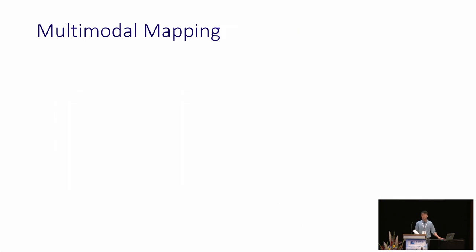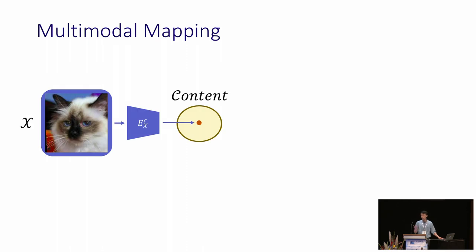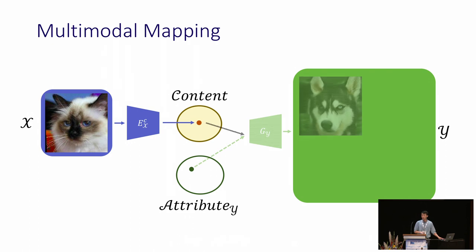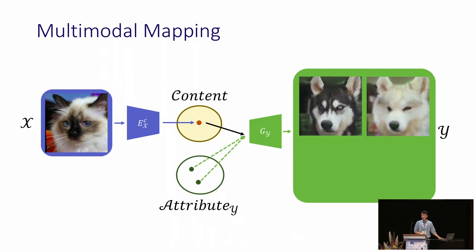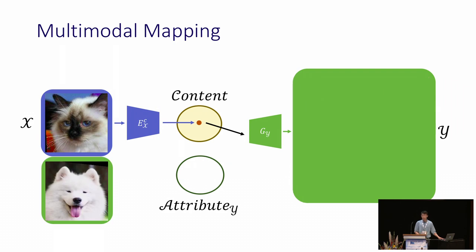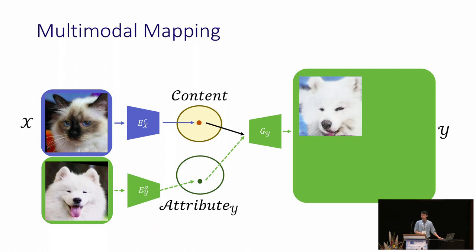Let's revisit the usage of the attribute space. How can an additional attribute space help multi-modal mapping? One domain provides a domain-invariant content feature, and then we can randomly sample in the attribute space to generate diverse results. With the attribute space, we can also perform example-guided translations. Given an image of the desired attribute, we can perform the translation with the matching attribute representation.